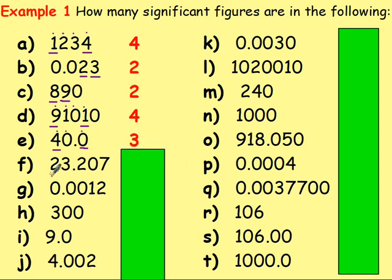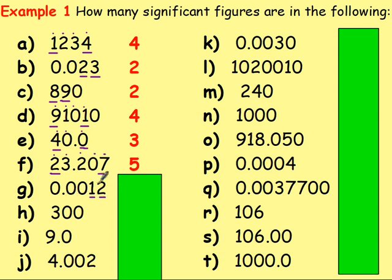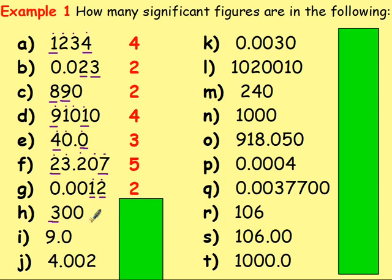With F, the first digit that is not a 0 is the 2. It ends after the decimal point, so we go up to the very last digit. We have 1, 2, 3, 4, 5 significant figures. With G, the first number that is not a 0 is the 1. It ends after the decimal point, and it ends at the 2, which means we would have 1 and then 2 significant figures. With H, the first digit that is not a 0 is the 3. It ends before the decimal point — there is no decimal there — so we go up to the last number that is not a 0, which also happens to be that 3. So that is the first significant figure and the last significant figure, meaning there is only one significant figure there.